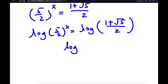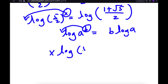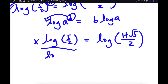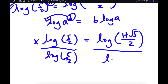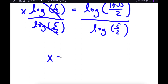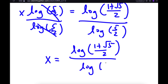If I have something in the form log a to the power of b, I can move the exponent b to the front to get b times log a. So log of 5 over 2 to the power of x becomes x times log of 5 over 2, equal to log of 1 plus the square root of 5 over 2. Dividing both sides by log 5 over 2, I get x is equal to log of 1 plus the square root of 5 over 2, divided by log 5 over 2.